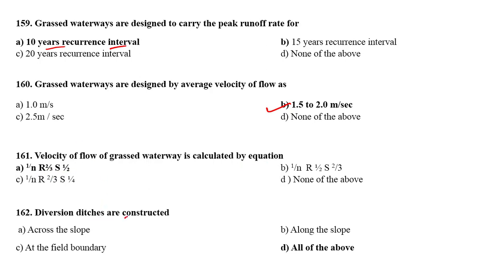Diversion ditches are constructed across the slope, along the slope, and at the field boundary. So the right answer is all of the above.